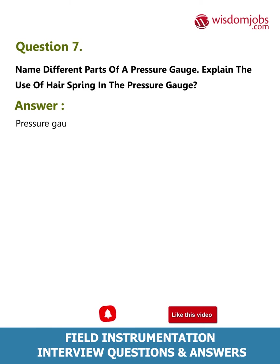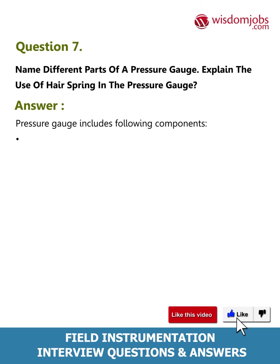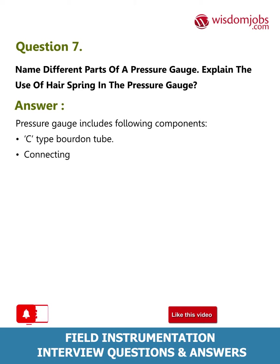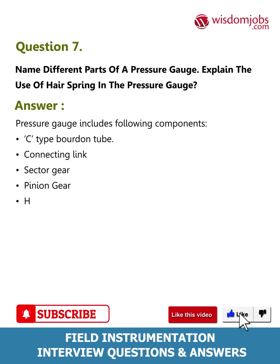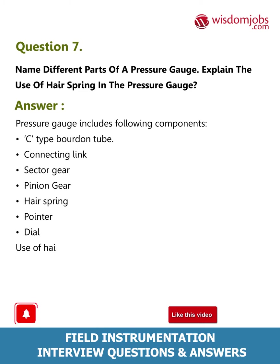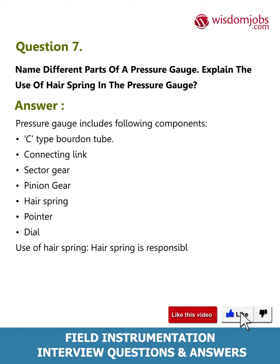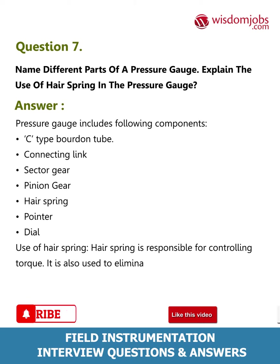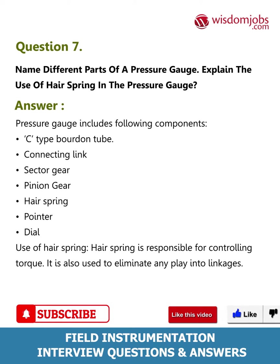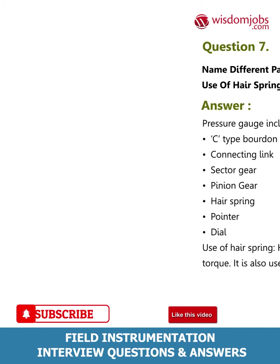Question 7: Name different parts of a pressure gauge and explain the use of the hairspring. Answer: A pressure gauge includes the following components — C-type Bourdon tube, connecting link, sector gear, pinion gear, hairspring, pointer, and dial. The hairspring is responsible for controlling torque. It is also used to eliminate any play in the linkages.